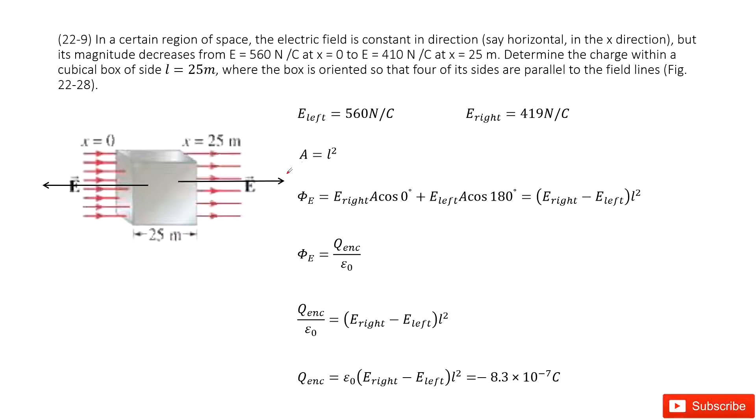We have a cube box with an electric field. At the left side, it is 560 newtons per coulomb. At the right side, it is 419 newtons per coulomb.